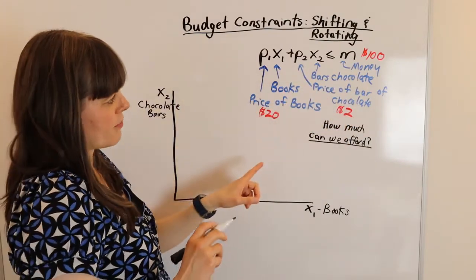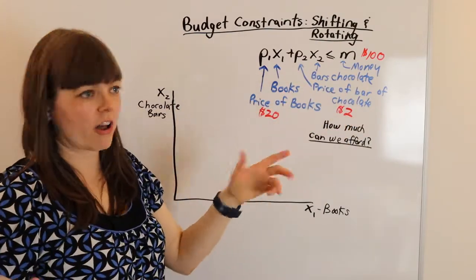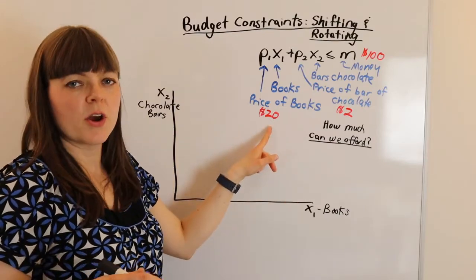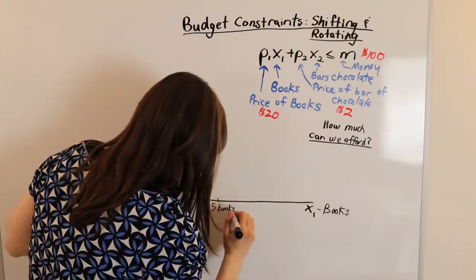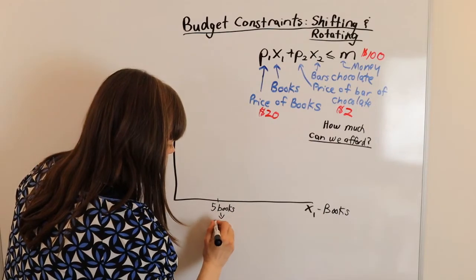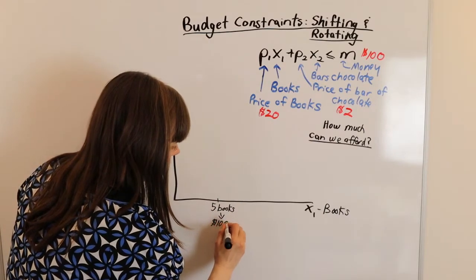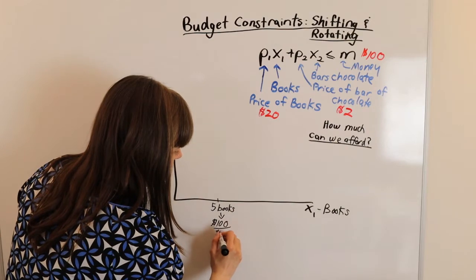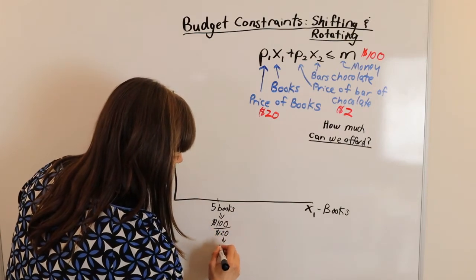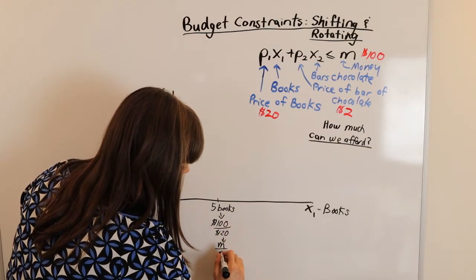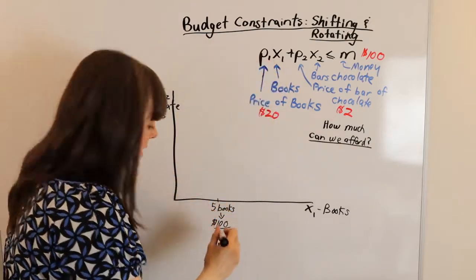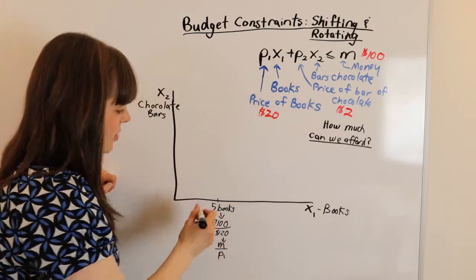If we spent all of our money on books with $100 at $20 per book, we can buy five books. And we got that by dividing the $100 we have by the price of a book, $20, which is also equal to M divided by the price of books is P1 in our case. So that's going to be our intercept.